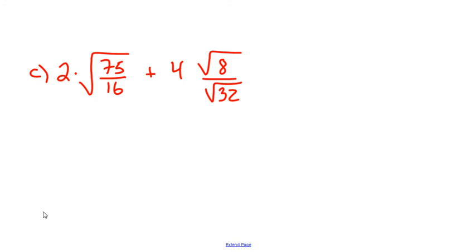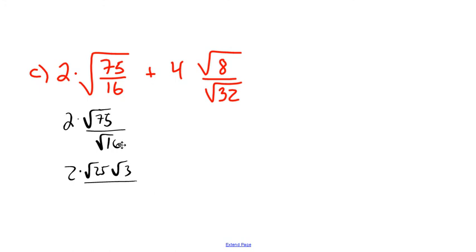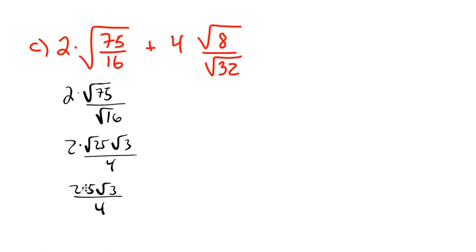Last but not least, Part C. On the left-hand side we have 2 times the square root of 75, all over the square root of 16. Square root of 75 can be written as square root of 25 times square root of 3, since 25 times 3 is 75. Square root of 16 is a perfect square, so that's just 4. Square root of 25 is 5, so we have 2 times 5 radical 3, all over 4.